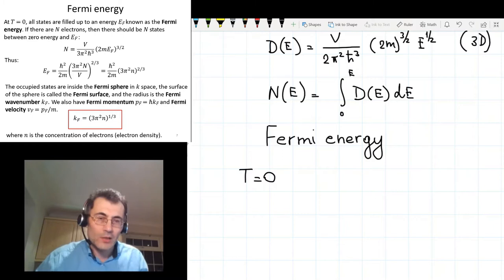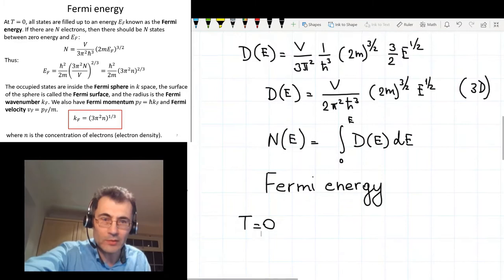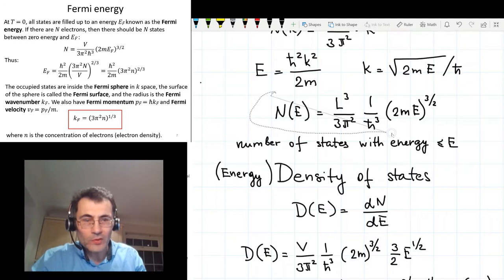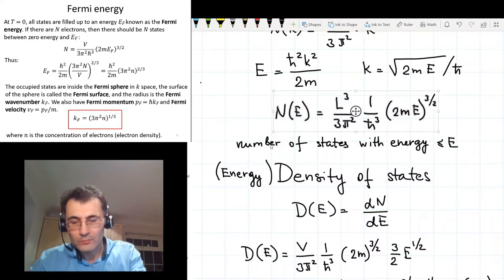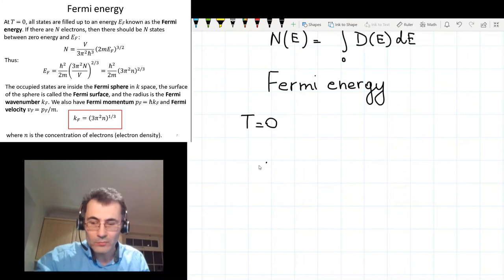So the equations that we have derived so far allow us to calculate Fermi energy quite simply. If we just scroll up a little bit, we'll find expression which we need, this one. So this gives us the number of states below certain energy n. So now if we replace this n with number of electrons, then the energy becomes the Fermi energy. I will just try to copy this expression. Okay, success.